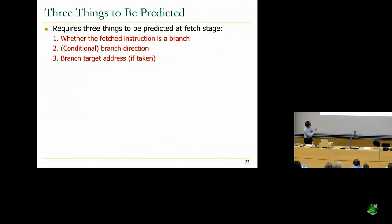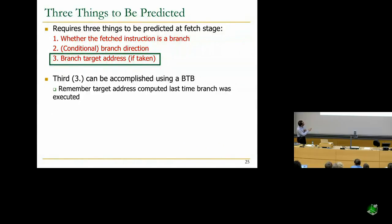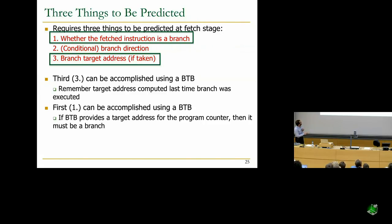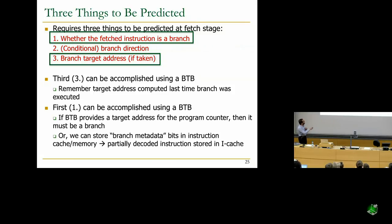We require three things to be predicted. The branch target address prediction can be accomplished using a branch target buffer (BTB) — note that a BTB was heavily used in the Spectre attack. The BTB remembers the target address computed last time the branch was executed. Whether the fetched instruction is a branch can also be determined from the BTB: if the BTB has a target address for that PC, it must be a branch.